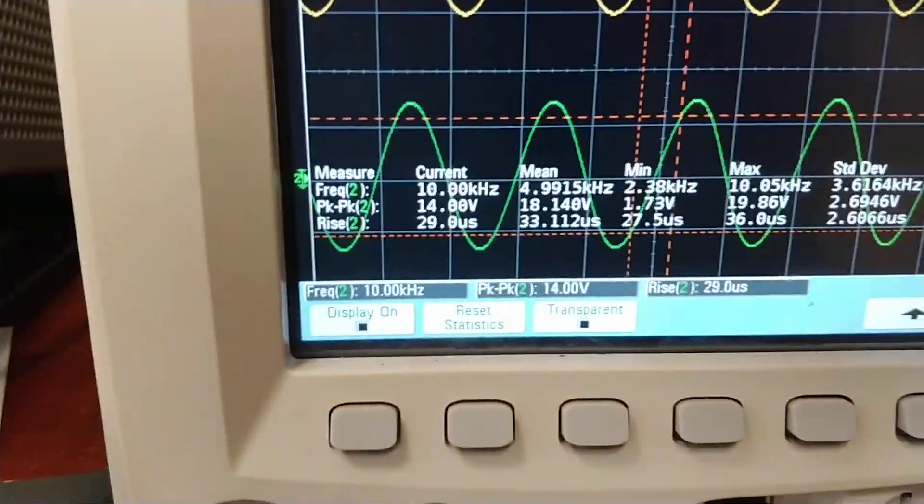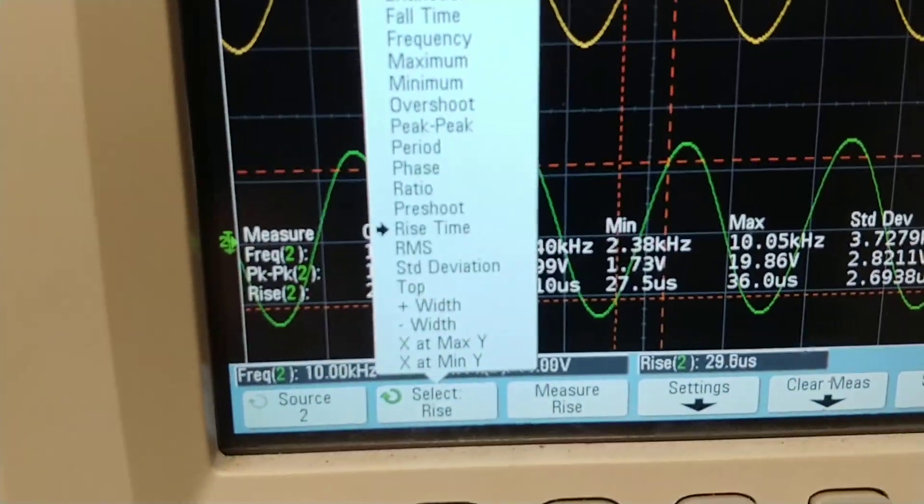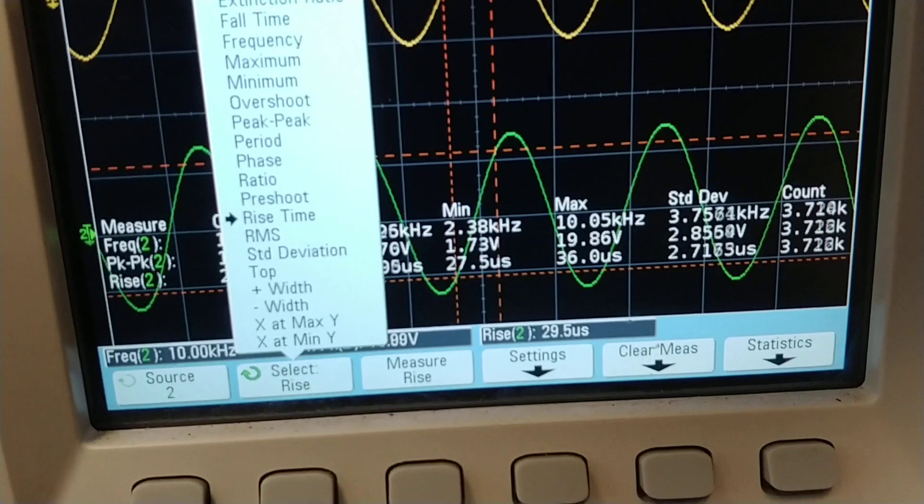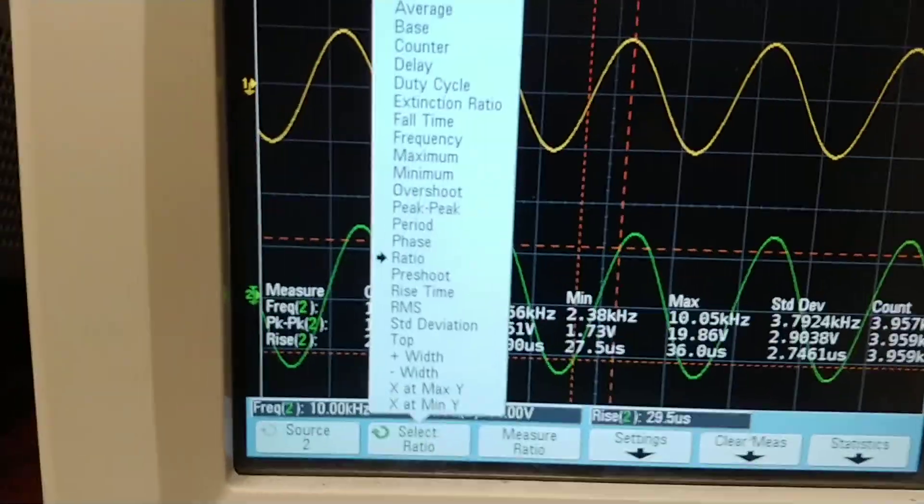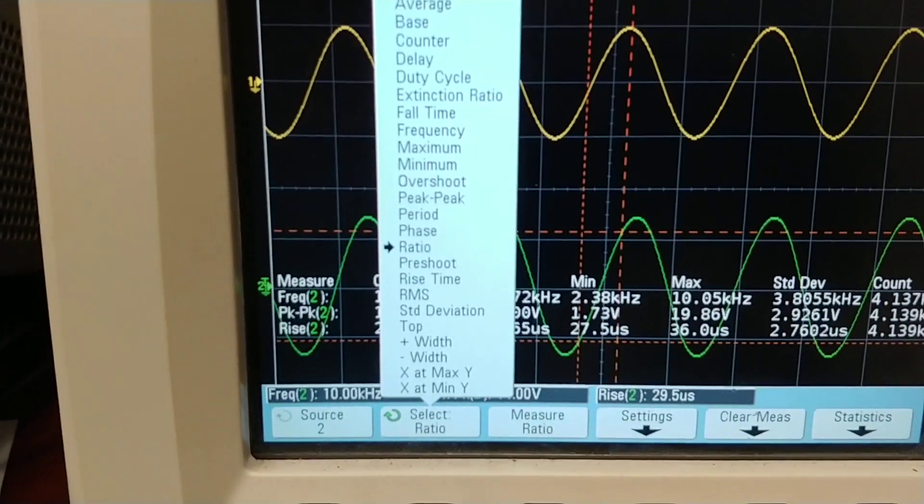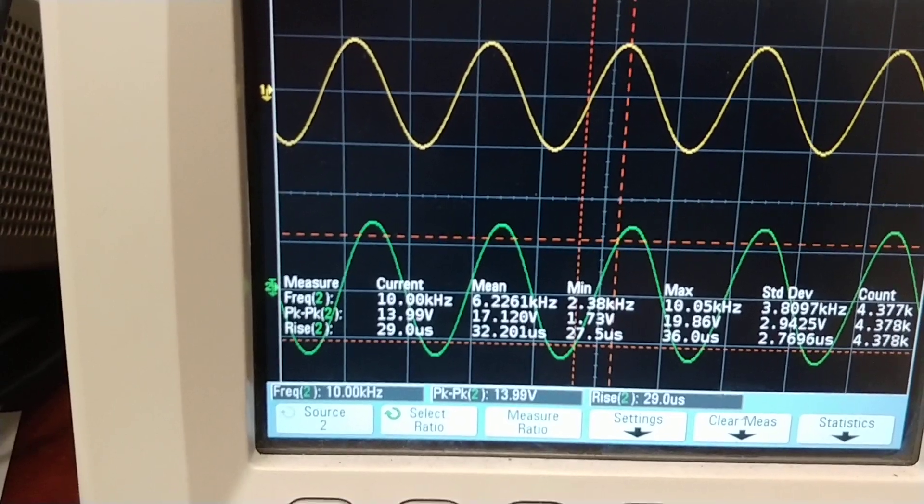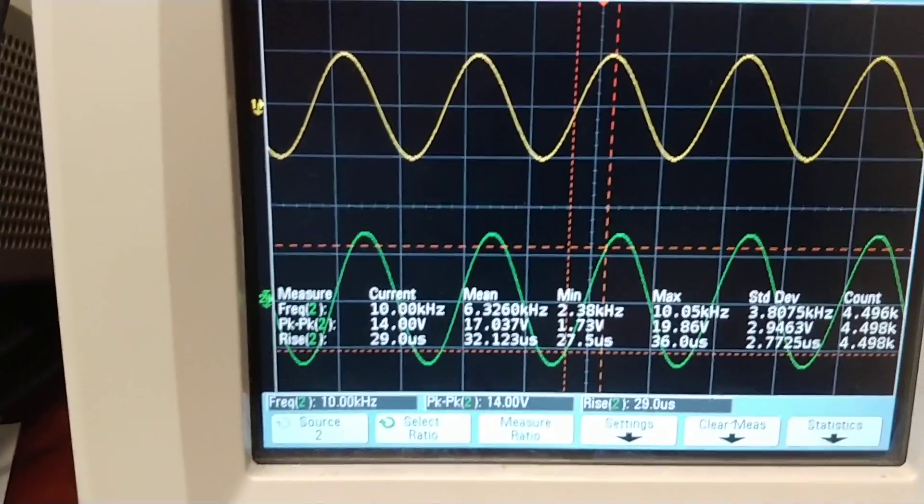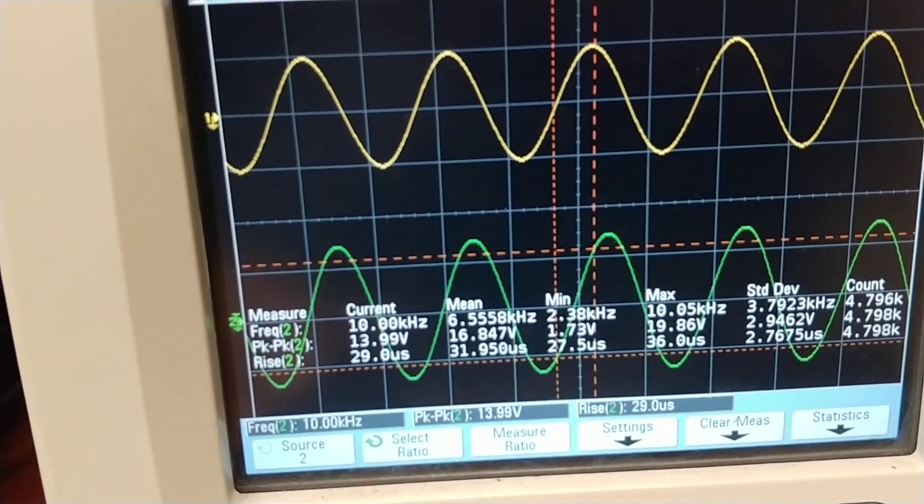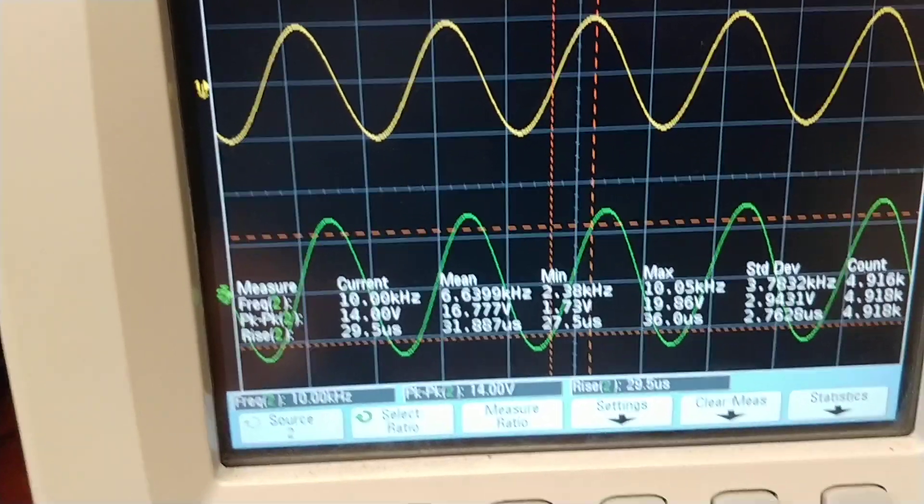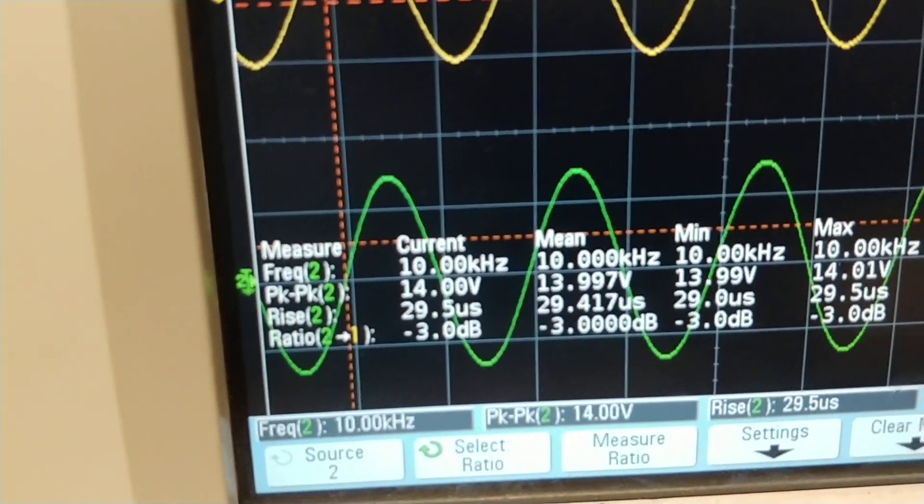Now on some oscilloscopes they don't have ratio, they just have peak to peak. If you don't have ratio, you have to measure the peak to peak of the input and divide that by the peak to peak of the output, and then you multiply the log of that times 20 to get it in dB. All I do is measure ratio and I'm getting 3dB.